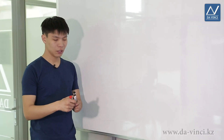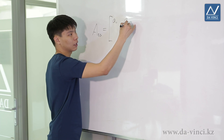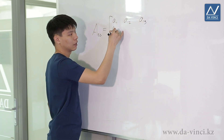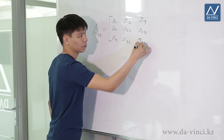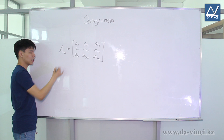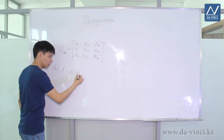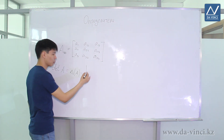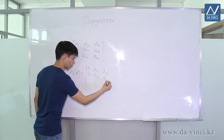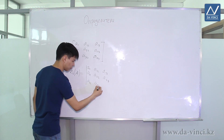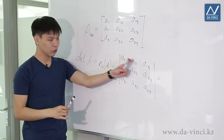Now let's consider the determinant of a 3 by 3 matrix. For this, we need to consider a square matrix A of 3 by 3 size. We can write its elements as A11, A12, A13, A21, A22, A23, A31, A32, A33. The determinant of a 3 by 3 matrix is a definite number calculated according to the following rule.